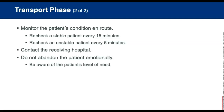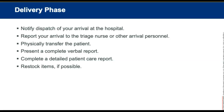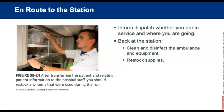The seventh phase is delivery. Inform dispatch upon arrival at the hospital. Report arrival to the triage nurse or other arriving hospital personnel. Physically transfer the patient, present a complete verbal report, and complete a detailed patient care report. Restock items used during the call. During en route to the station phase, notify dispatch that you are coming back in service. Once back at the station, clean and disinfect the ambulance and equipment if not already done at the hospital, and restock supplies.